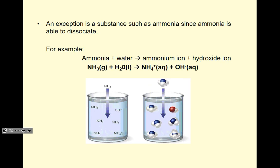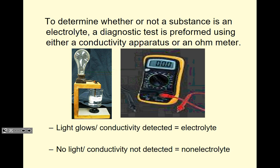An exception is ammonia. Although ammonia looks like a molecular compound, it is actually a base. Scientists first assumed it wasn't a base because of its molecular appearance, but when dissolved in water and tested with litmus paper it showed up as a base — it is able to dissociate. We'll discuss this further in our acids and bases unit; for now, just know that ammonia is an exception to the molecular substance rule.